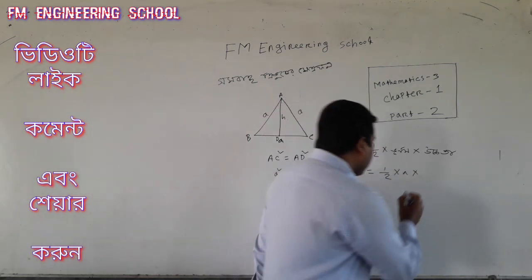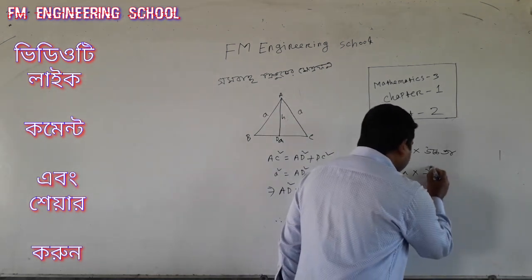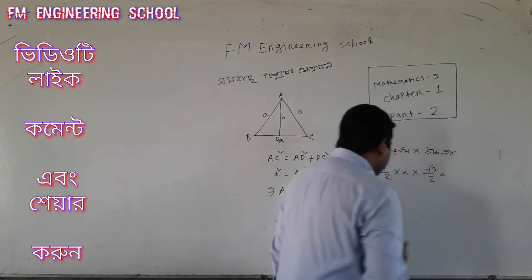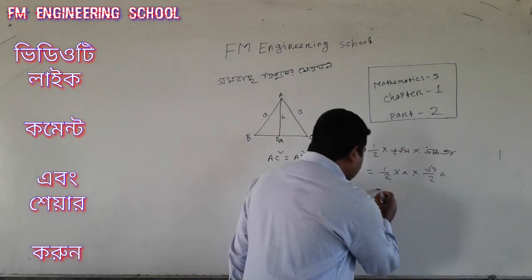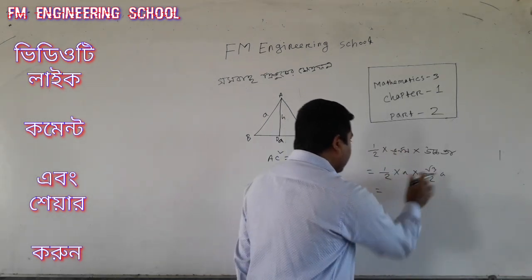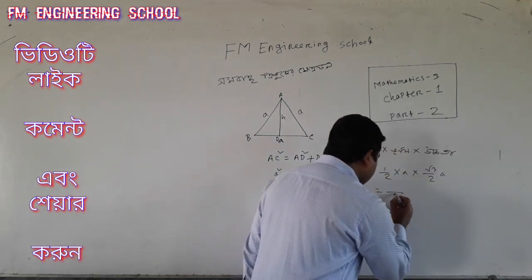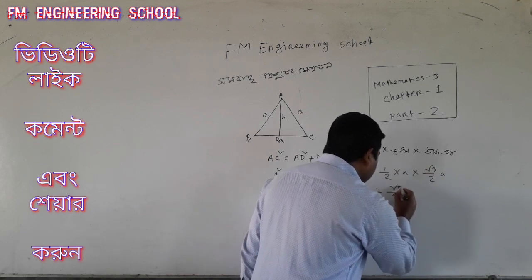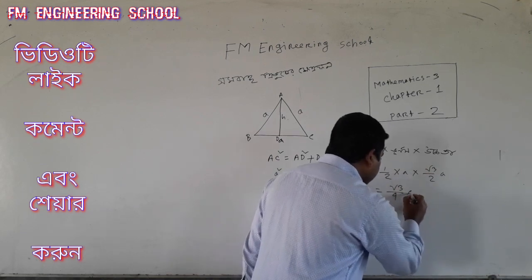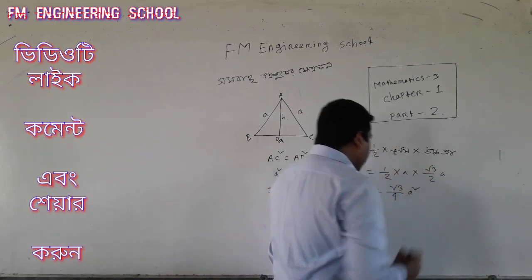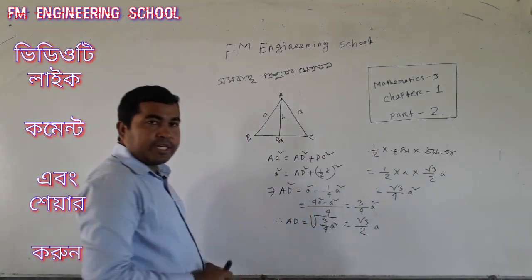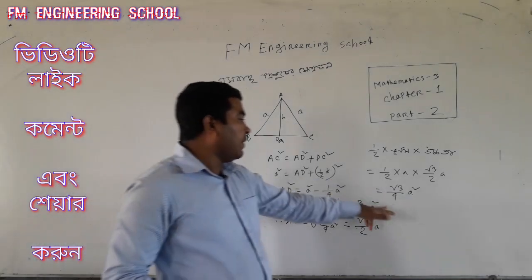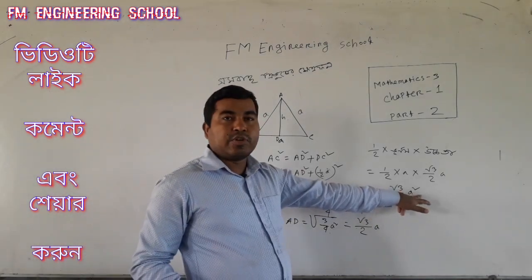How do we add root 3 back to 2 into A? We will add 2 and 2. We will add 4. We will add root 3. A will add A square. So we will add root 3 back to A square.